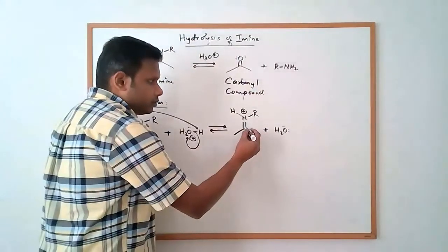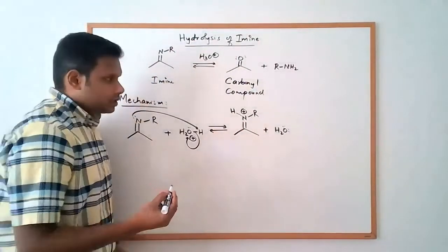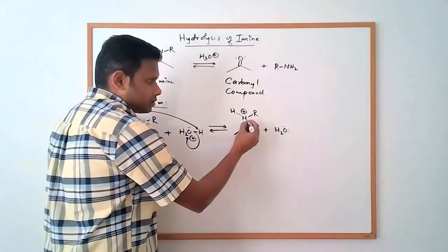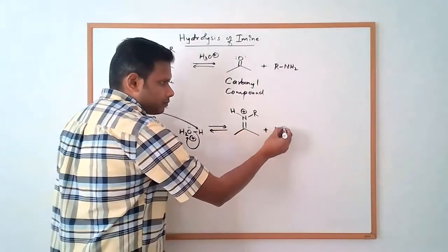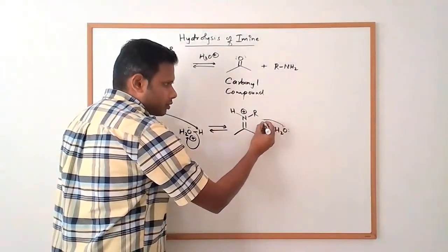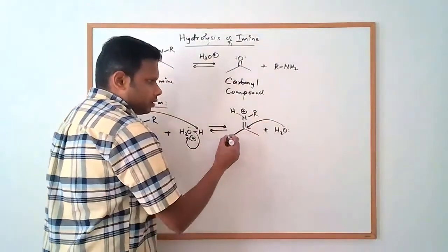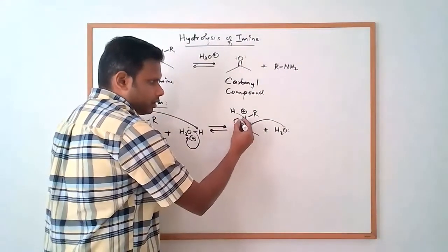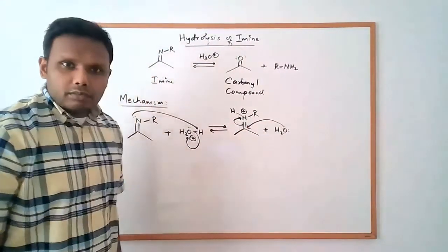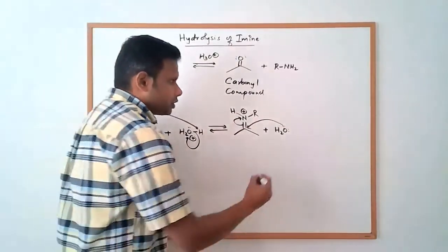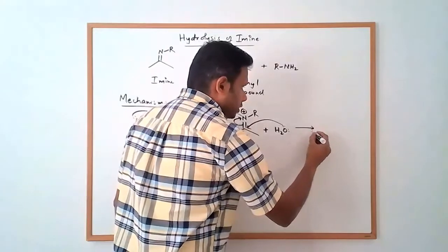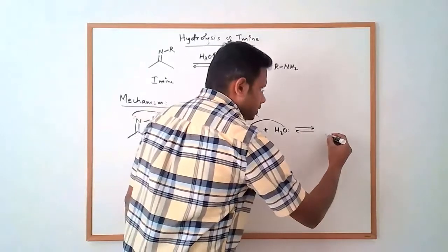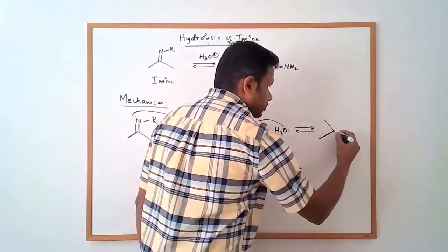So what we can do is in a mechanistic sense the next step is now that we have this protonated imine we can have a water molecule come and attack the carbon here and simultaneously the double bond would open up. Electrons get pushed to that nitrogen so that we get to our next intermediate where